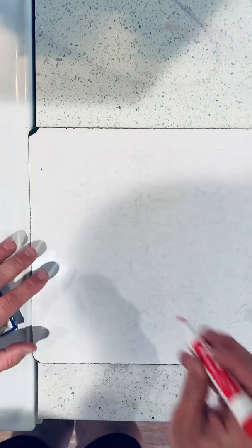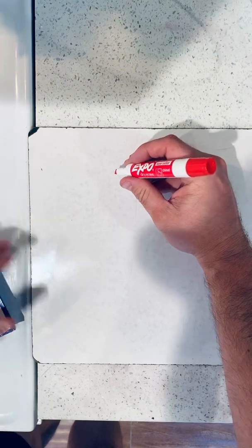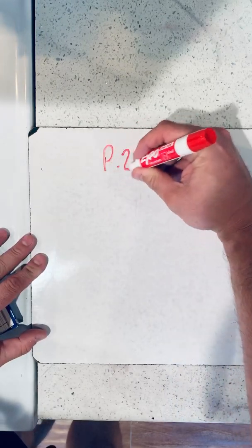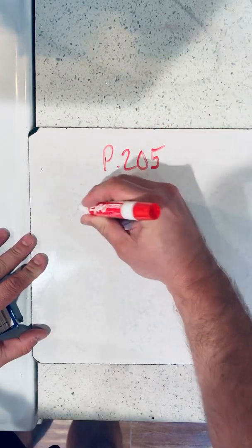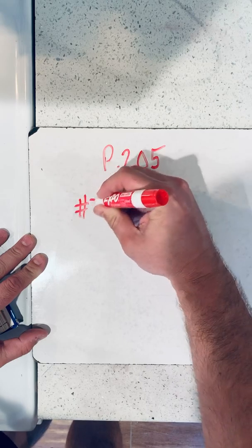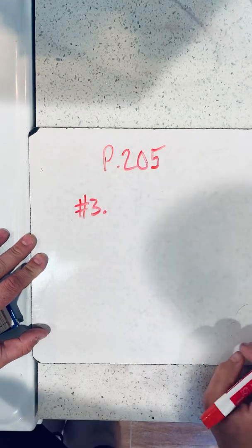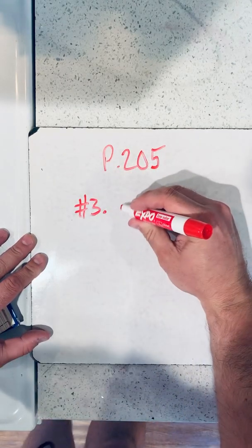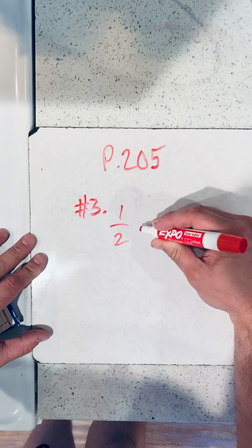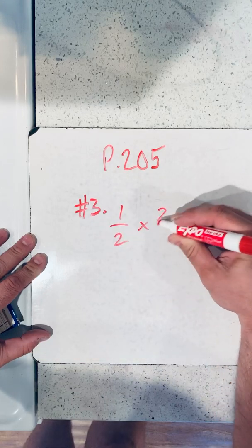So we're going to look at number 3 on page 205. Number 3 says 1 half times 2 thirds.